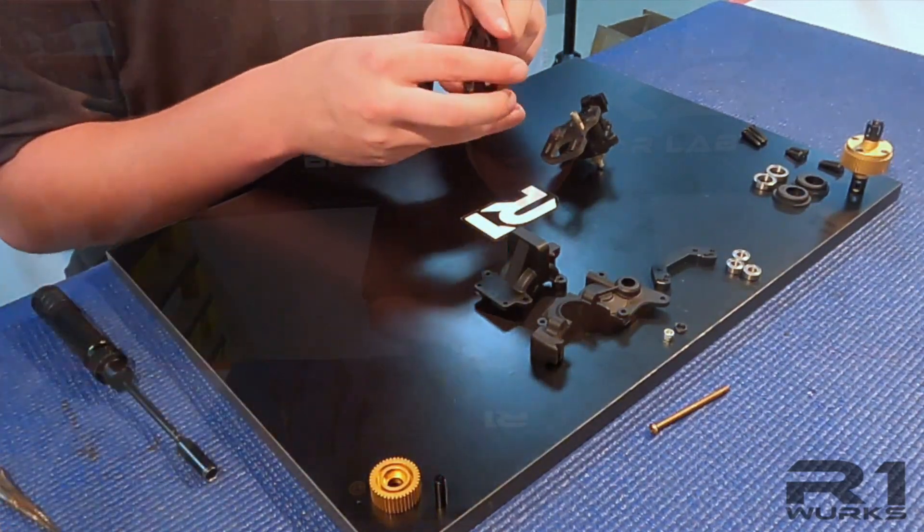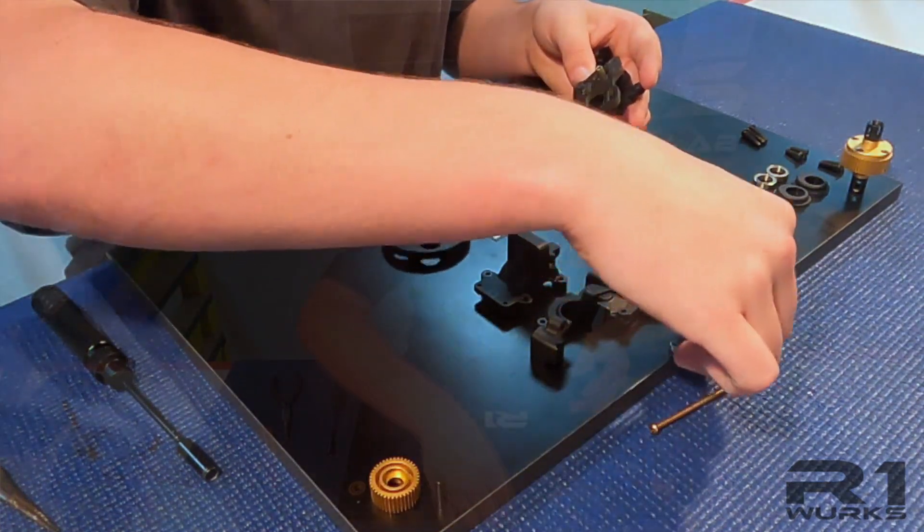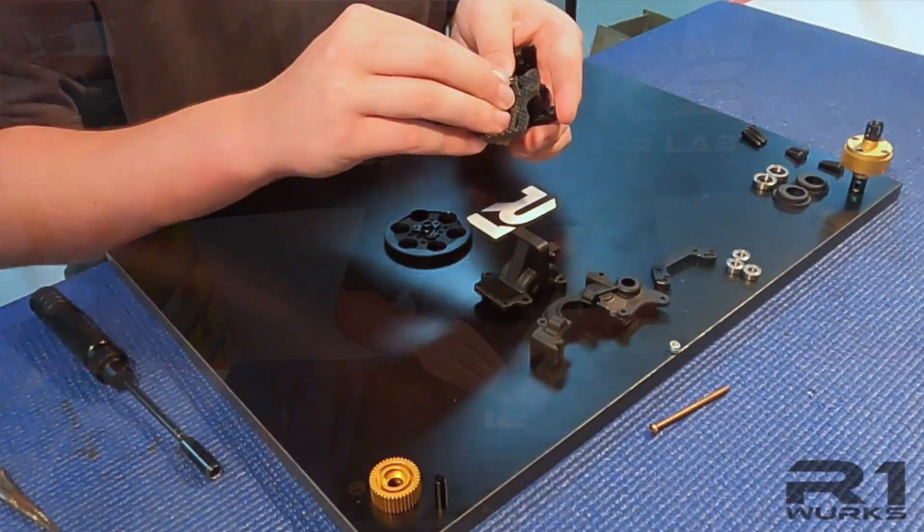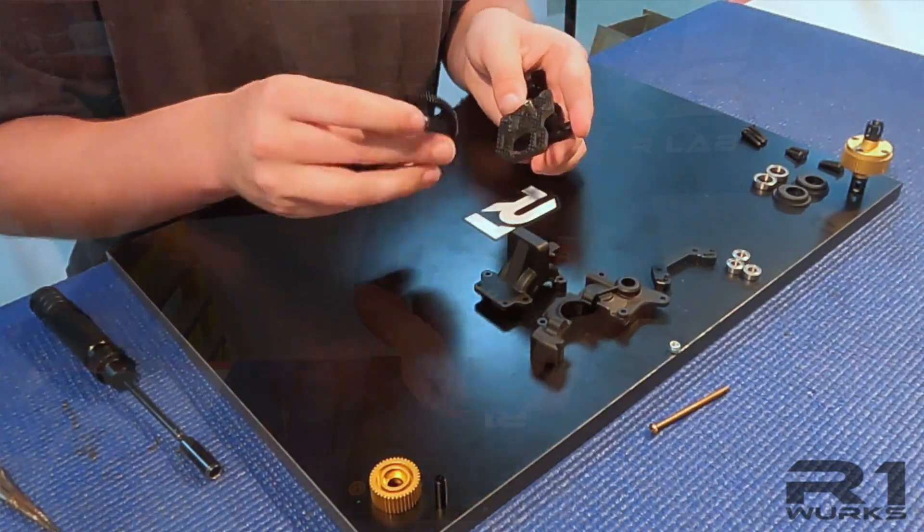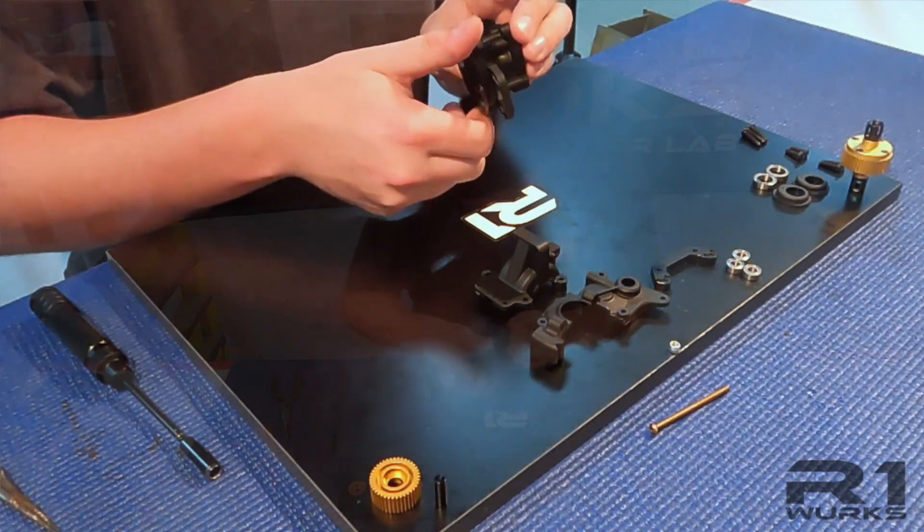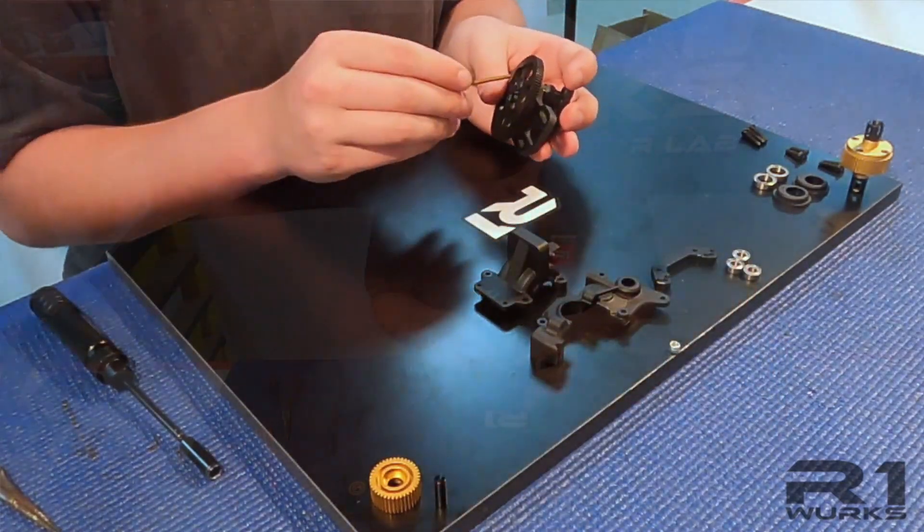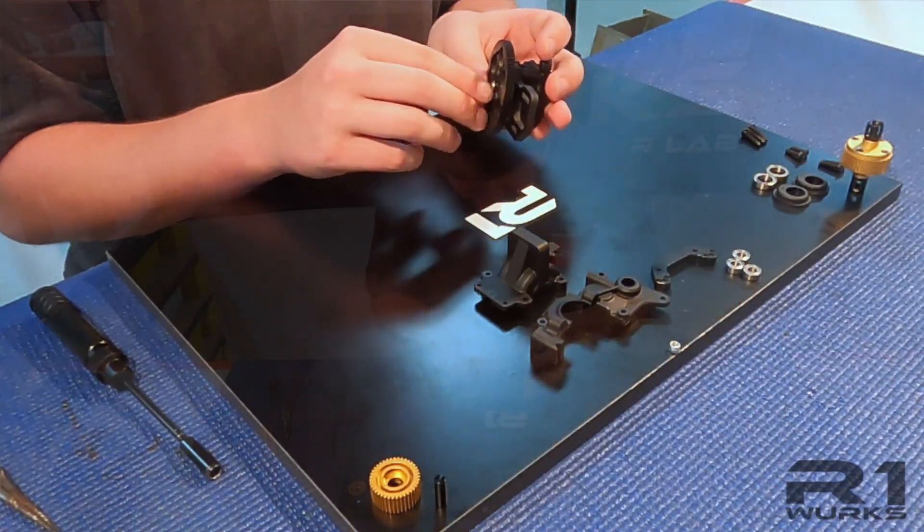And then we can put this adapter on after you put this shim through here. Just like that. And then line up the flat sides. Slide right on. And then we are going to put the eliminator screw through.